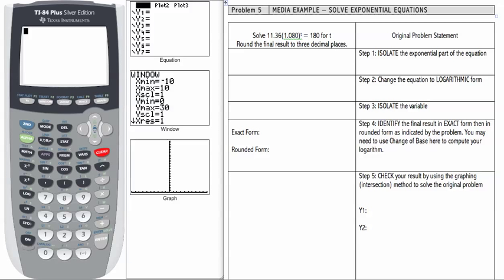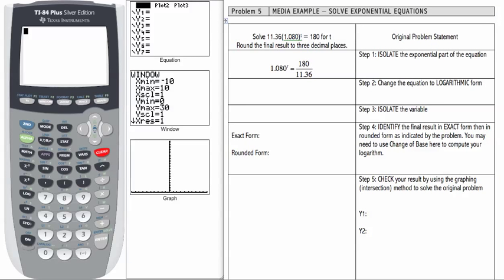Our first step, as before, is to isolate the exponential part of the equation. The exponential part is 1.080 raised to the t. 11.36 is multiplied by that, so the first thing we need to do is divide both sides by 11.36. If we do that, we get 1.080 to the t equals 180 over 11.36.